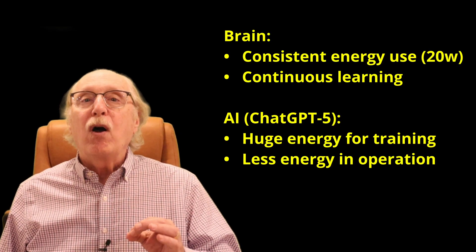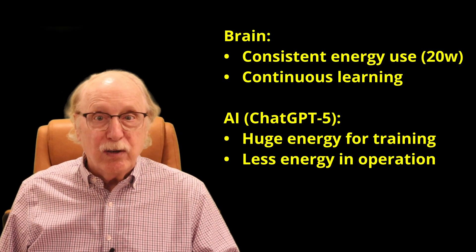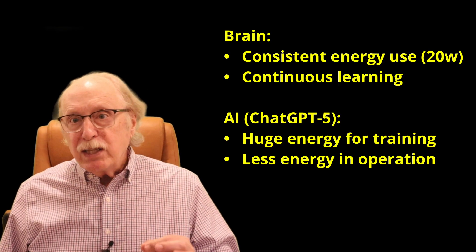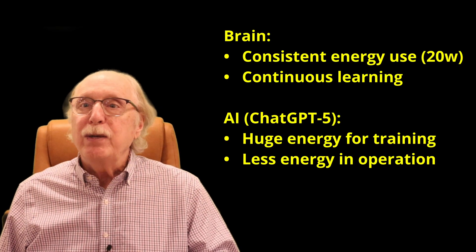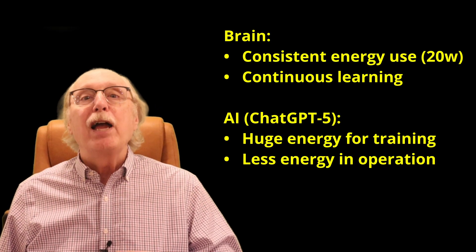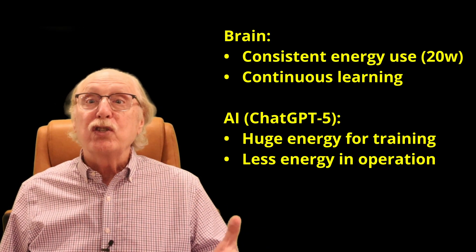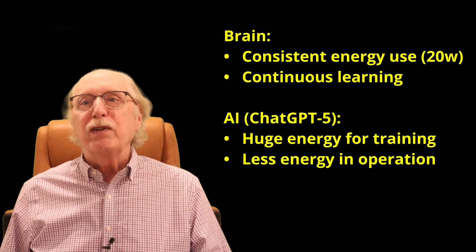Another stark side effect of the contrast in learning lies in energy use. Training today's large models requires enormous compute resources and energy, sometimes rivaling entire power plants. This is at the heart of the current AI energy crisis. Let's look at the energy of ChatGPT-5, which was trained using several gigawatt hours of energy.